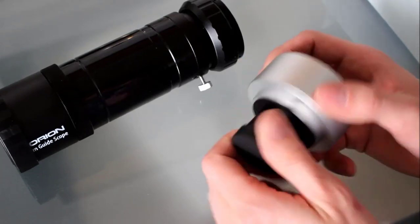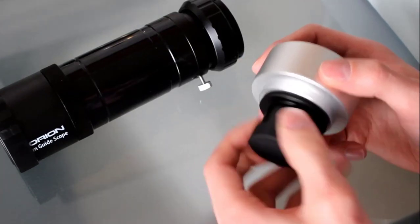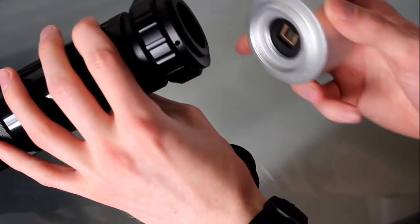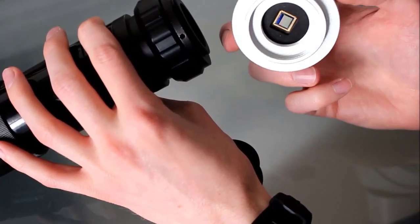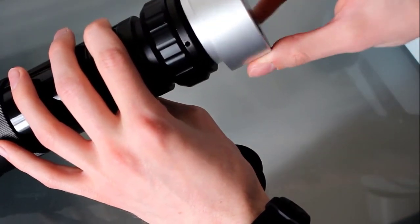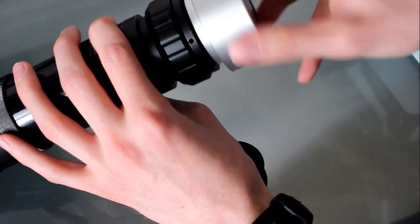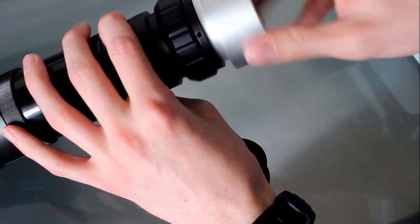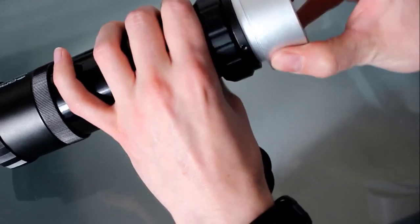The Starshoot Autoguider is also T-threaded. So if you want a more secure connection than just using the 1¼-inch barrel, you can actually just unscrew it, and if your guide scope has T-threads, you can actually just thread it right onto the guide scope, which will give you a lot more secure of a connection.